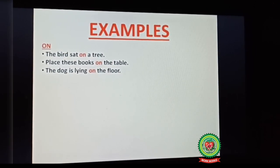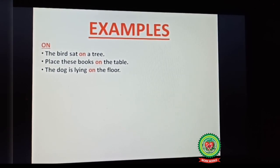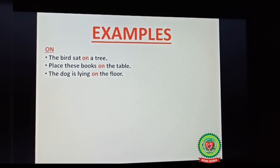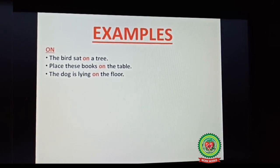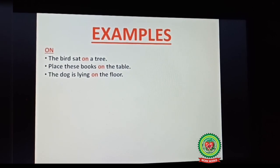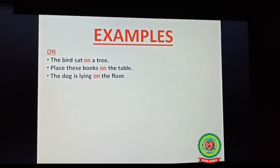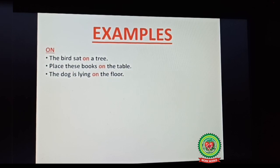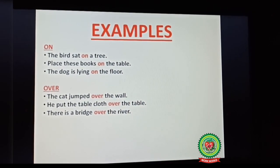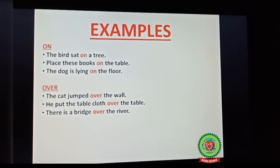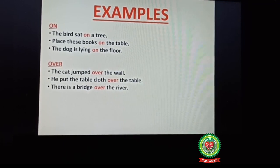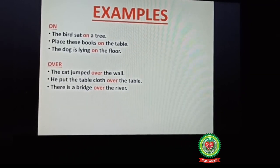On: 'The bird sat on a tree.' Here the bird is touching the surface of the tree, so we use the preposition 'on,' indicating a relationship of noun 'bird' with the other noun 'tree.' 'Place these books on the table' — 'on' indicates the position of where books are lying. 'The dog is lying on the floor.' Over: 'The cat jumped over the wall' — the cat is not touching the surface of the wall, so we use 'over.' 'He put the tablecloth over the table.' 'There is a bridge over the river' — the bridge is not touching the river, so we use preposition 'over.'